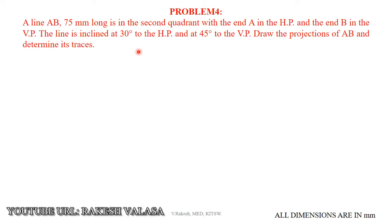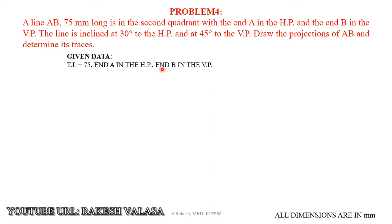He has given that the line name is AB, its true length equals 75 mm. One condition: end A is in the HP and end B is in the VP. Another condition: the line is inclined at 30 degrees to the HP and 45 degrees to the VP — that means theta equals 30 degrees and phi equals 45 degrees.